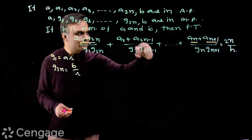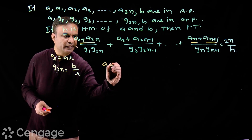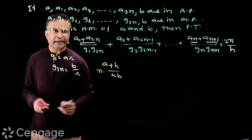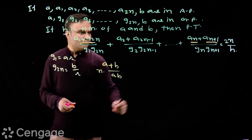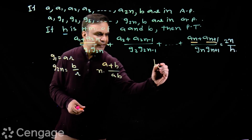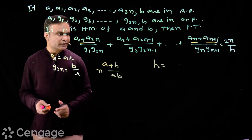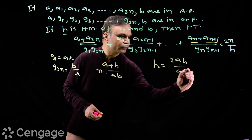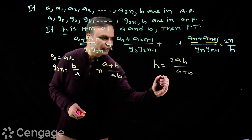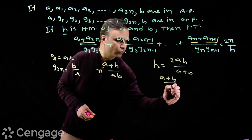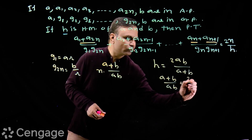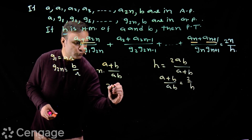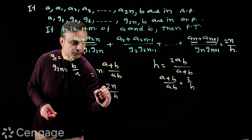So each of these n terms is (a plus b) over ab, and this occurs n times. Now, what is the harmonic mean h between two numbers a and b? It is 2ab over (a plus b). From this we have (a plus b) over ab equal to 2 upon h. Putting this value, we get 2n upon h.